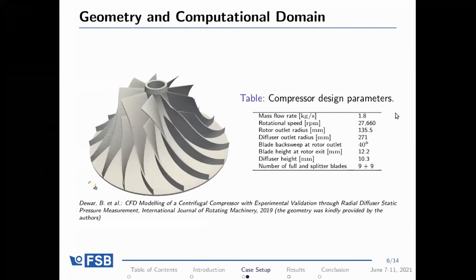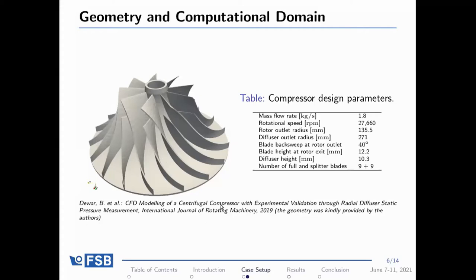The compressor geometry was provided by Finnish scientists — a high-speed compressor with a special design featuring splitter blades in the middle of the channel between the long blades. These splitter blades serve to make the flow more uniform and reduce recirculation or turbulence.